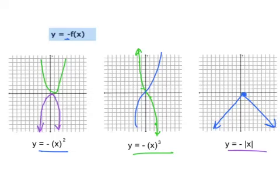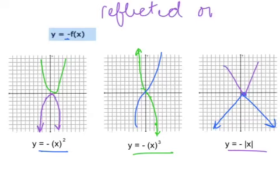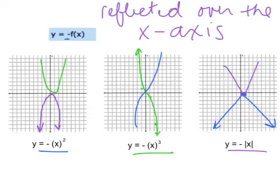What all happened? And they flipped or reflected over the x-axis. So if the negative sign is outside our function, we flip over our x-axis.